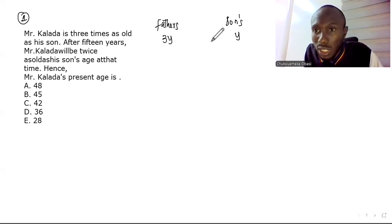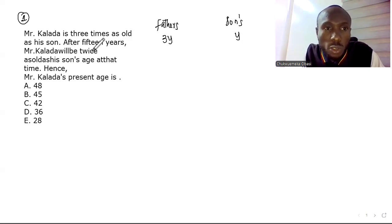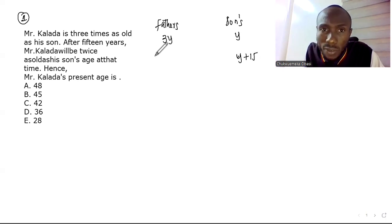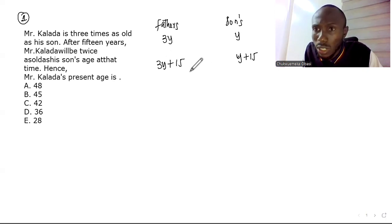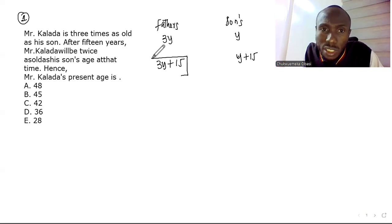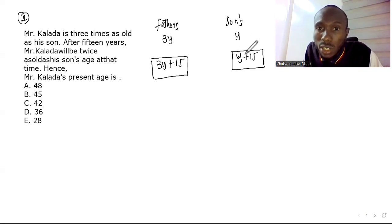After 15 years, Mr. Kaladar will be twice as old as his son. So 15 years from now, the son's age will be y + 15, and the father's age will be 3y + 15 — we simply add 15 years to their current ages. At that point, Mr. Kaladar's age will be two times the son's age.